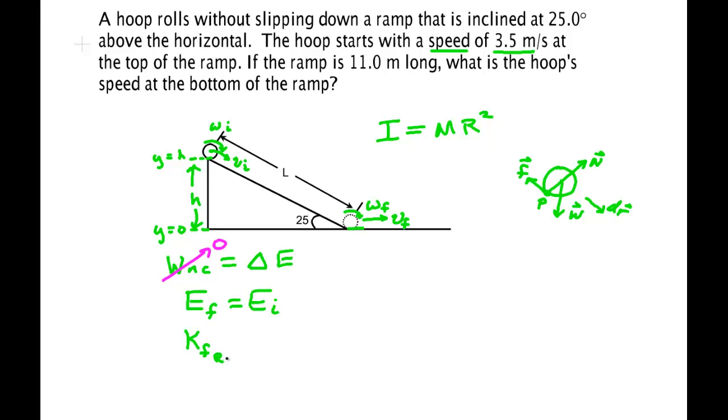So here's what we do. K final of rotation, plus K final of translation, plus U final, has to equal K initial of rotation, plus K initial of translation, plus U initial. Now the final potential is zero because of the way I set it up, because it's at Y equals zero. The initial value here was M, G, Y. We need to put in these translational and kinetic energies.